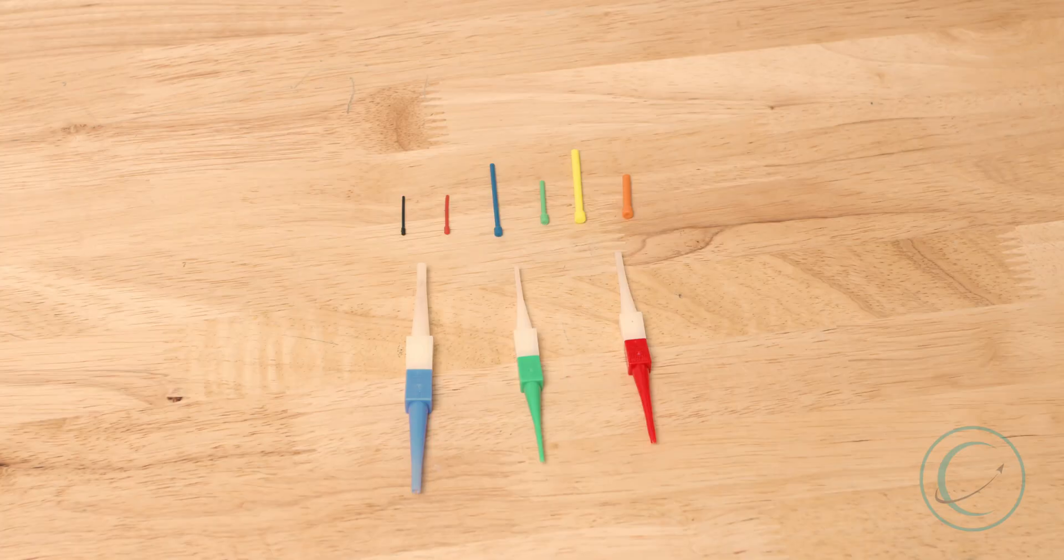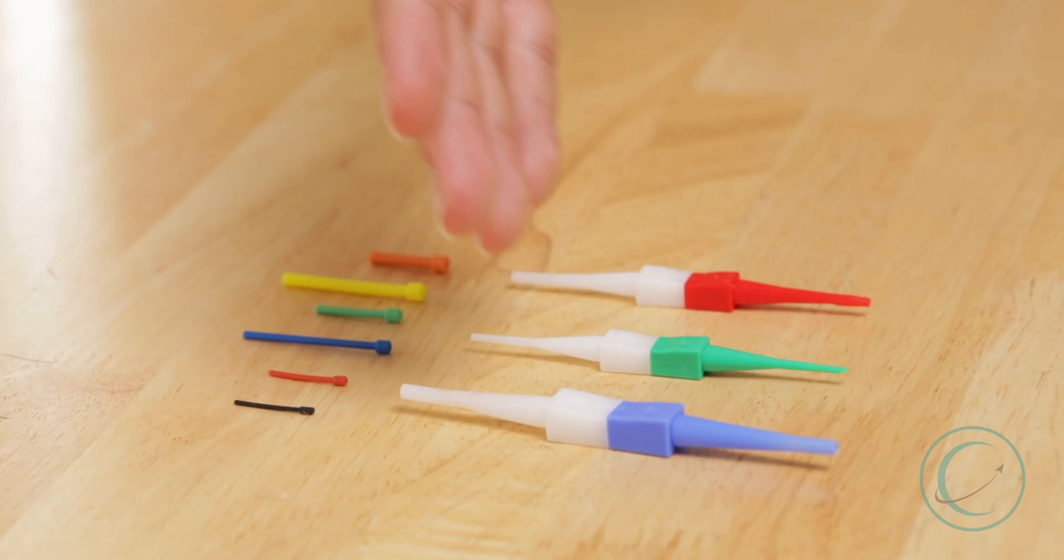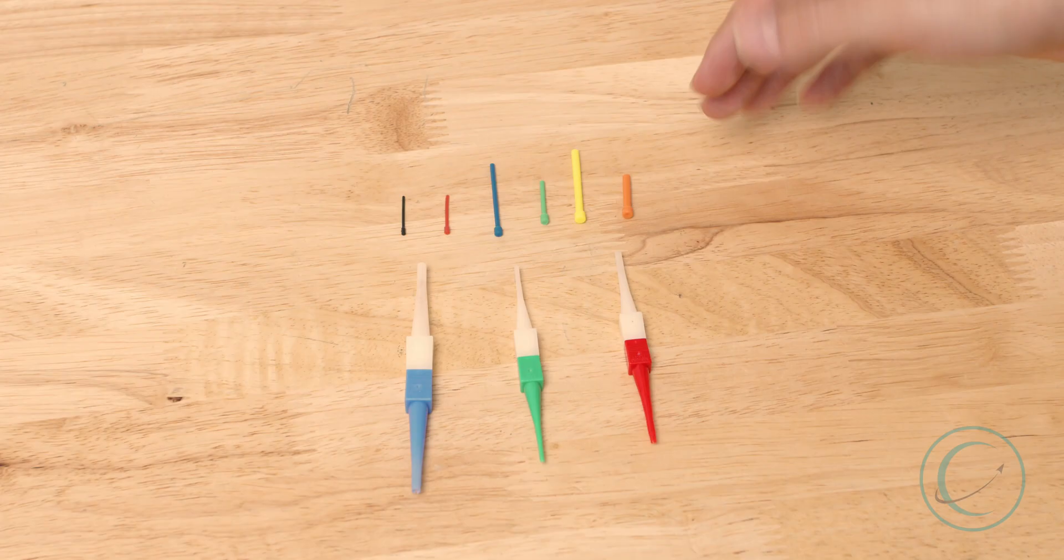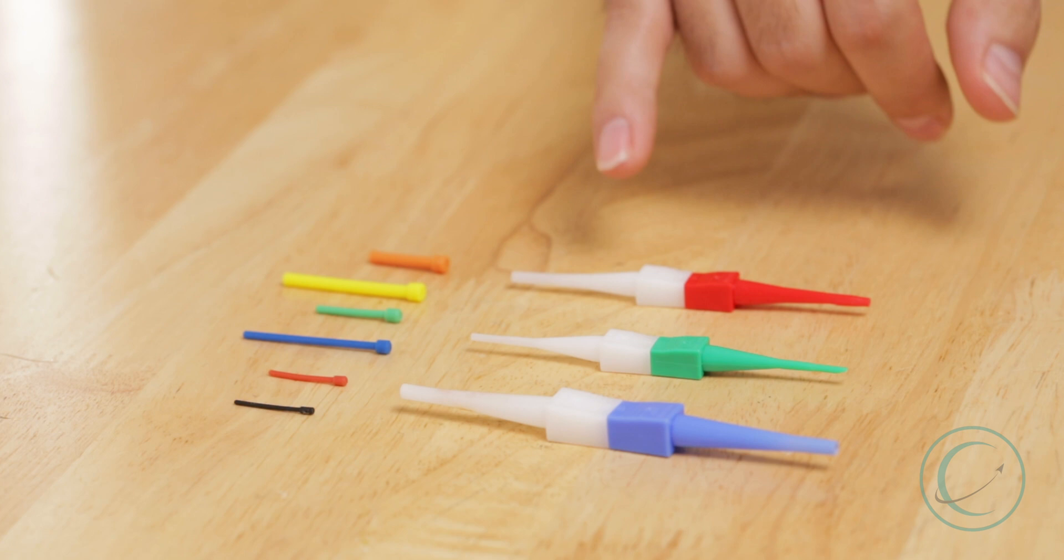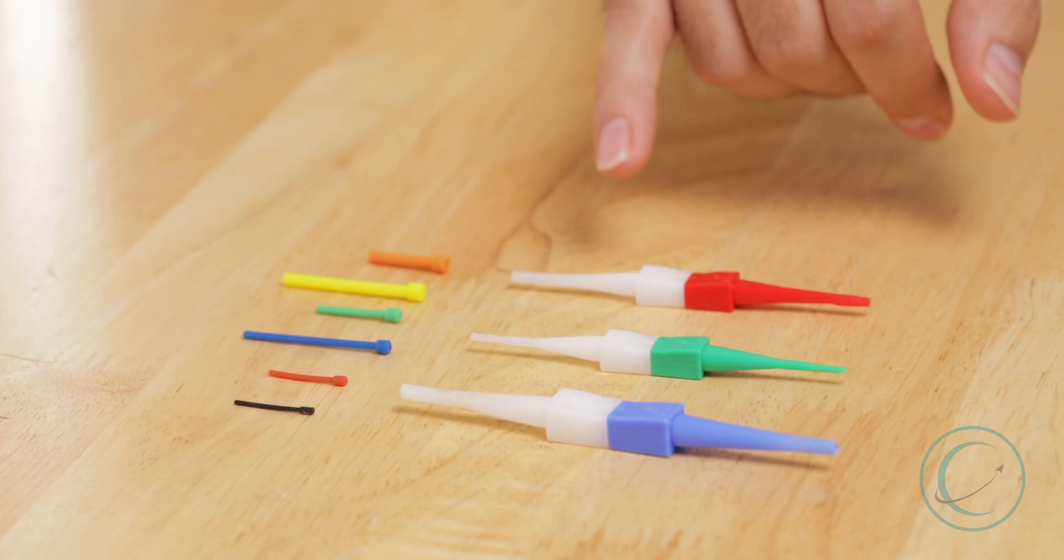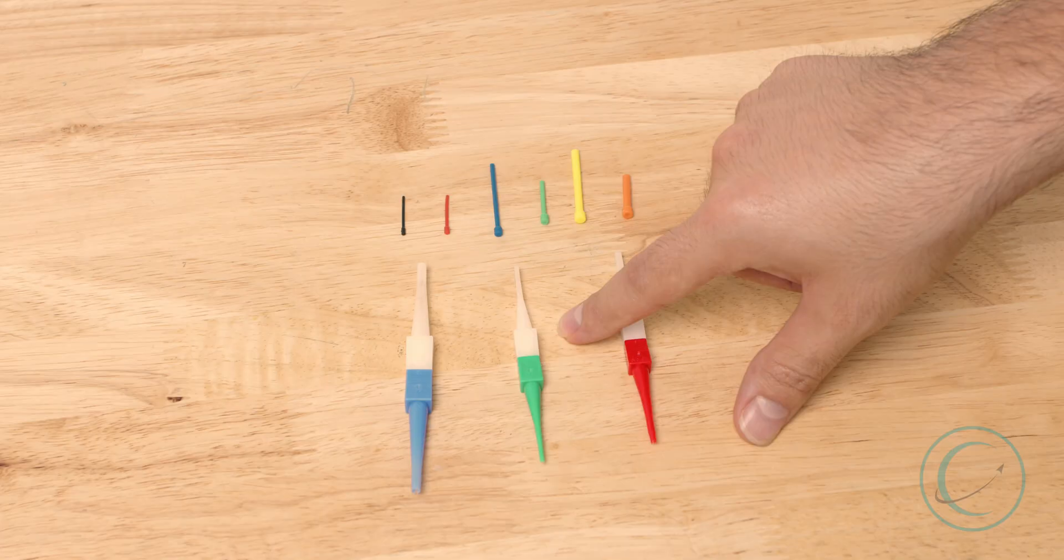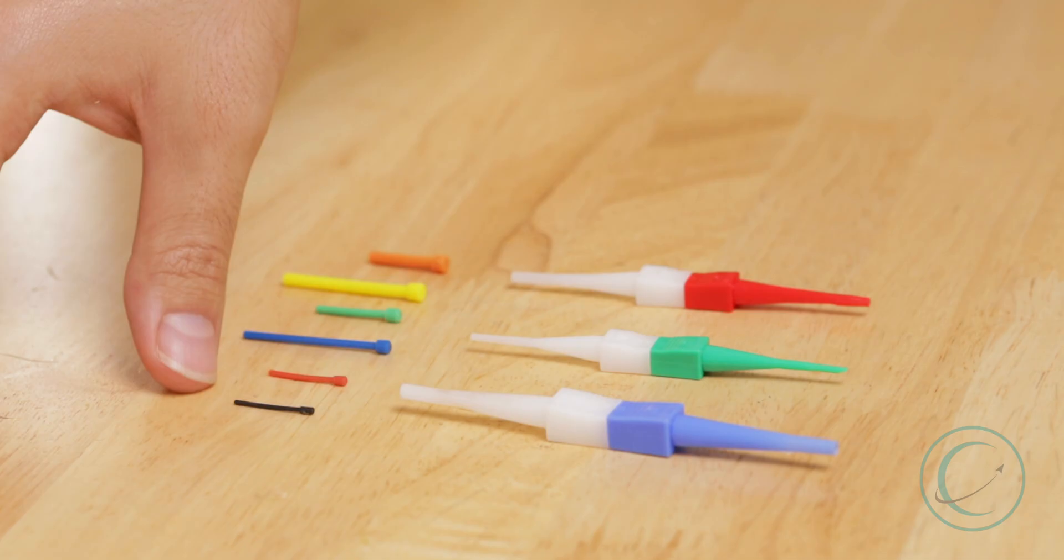And just for demonstration purposes, here we have an array of filler plugs, also known as dog bones, and an array of insertion extraction tools. So you can see there are different sizes and their size does coordinate with their color. This red insertion extraction tool would be used for a 22 gauge connector. A green and white will be used for a smaller gauge like 26, and this blue and white here would be used for a larger size around 18 gauge.